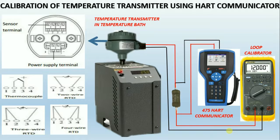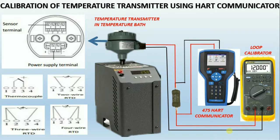After completing the connection, set the zero temperature value in the calibration bath according to the lower range value in HART, and check the corresponding 4 milliamps in the loop calibrator. If it is not showing the corresponding milliamps, then using HART, perform the lower sensor trim.